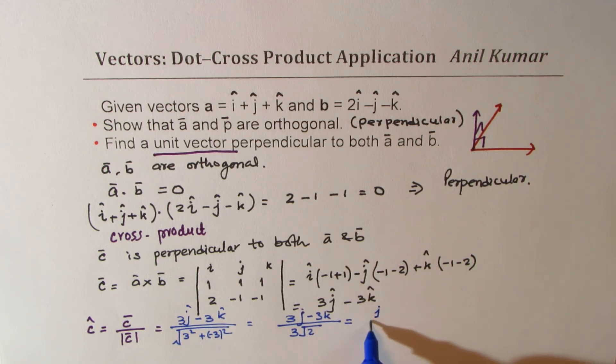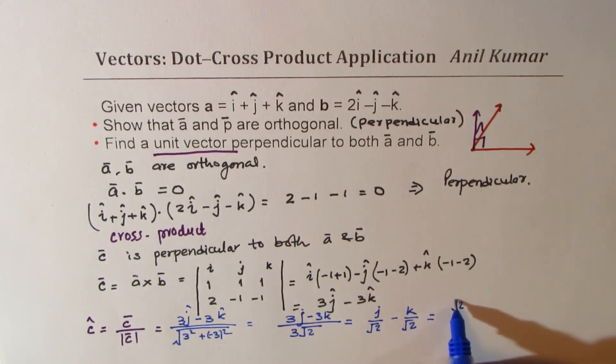You could rationalize this also, or you may write i over square root 2 plus j over square root 2 minus k over square root 2, or you could also write this as (square root 2 over 2)i plus (square root 2 over 2)j minus (square root 2 over 2)k.